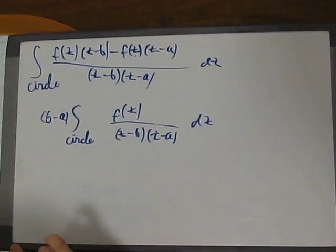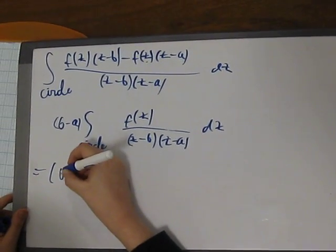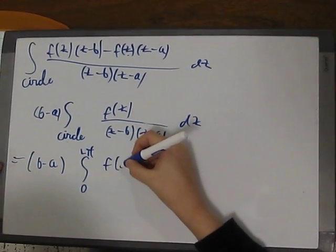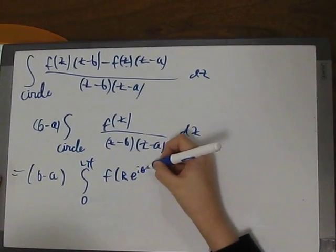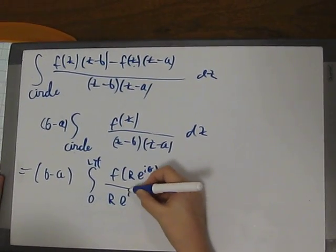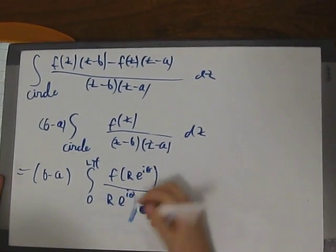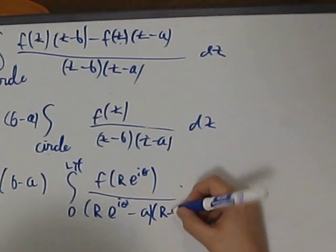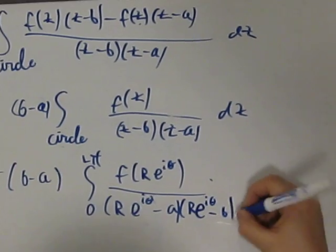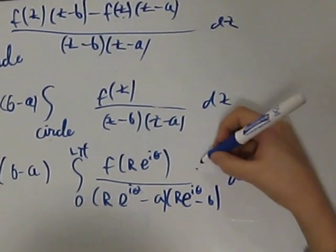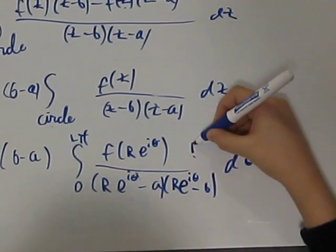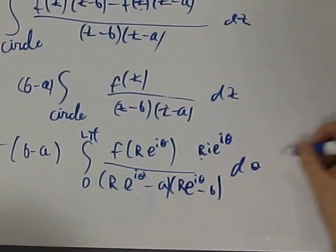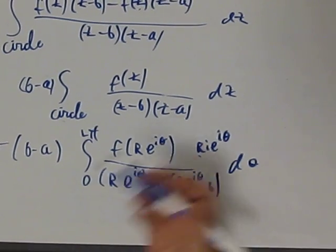Well, what was a circle? A circle of radius R. So, this is equal to B minus A times the integral of zero to 2π of F of R times e^(iθ) divided by R times e^(iθ) minus A. D times the derivative of this, that is R times e^(iθ). Well, if this is zero, so the modulus is zero.